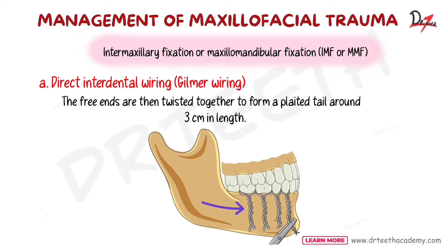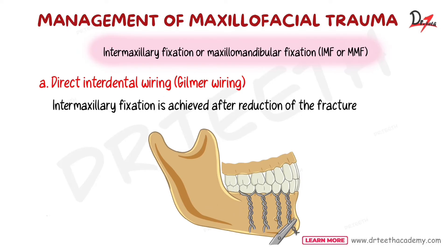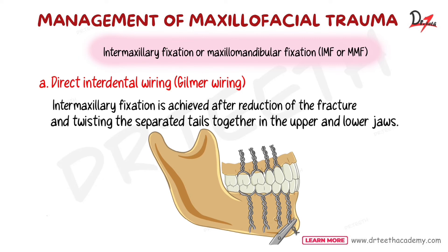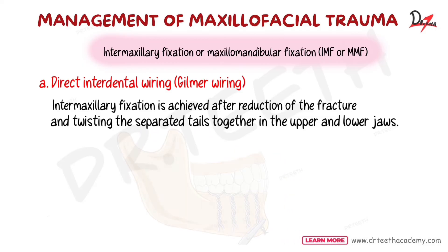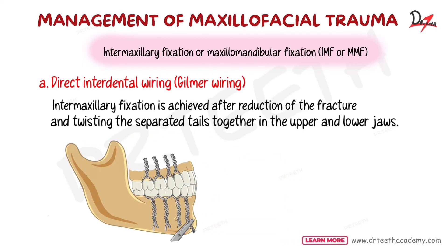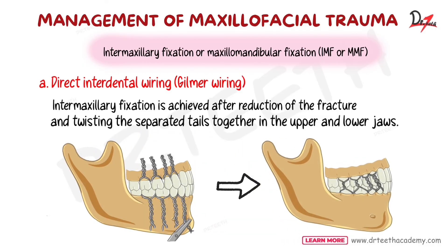This is done along all the required teeth. Intermaxillary fixation is then achieved after reduction of the fracture by twisting the separated tails together in the upper and lower jaw — the tails from the upper and lower jaws are twisted together to achieve IMF.